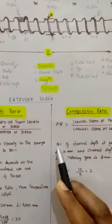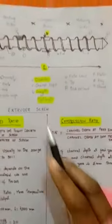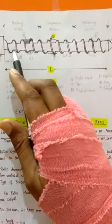Let's go with an example. If the channel depth at feed zone is 10 mm, so the depth of the channel is 10 mm at feed zone.